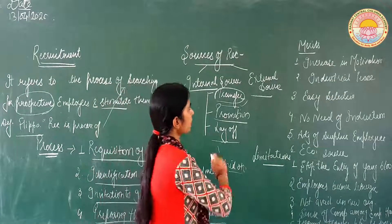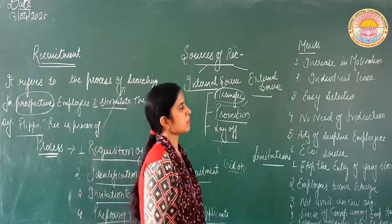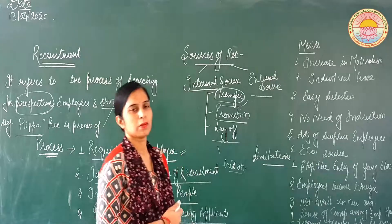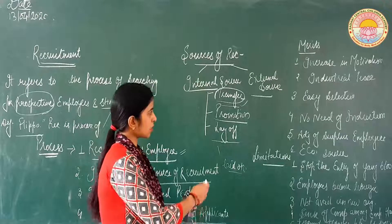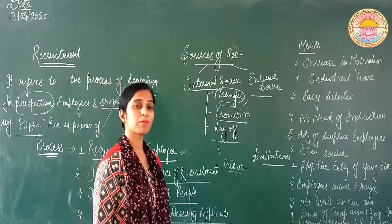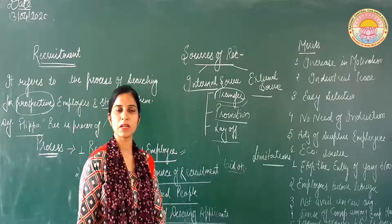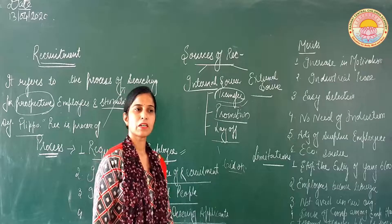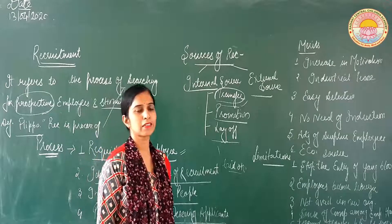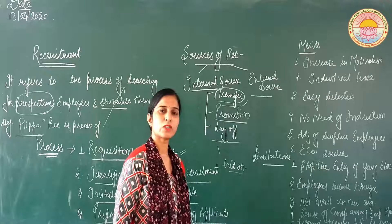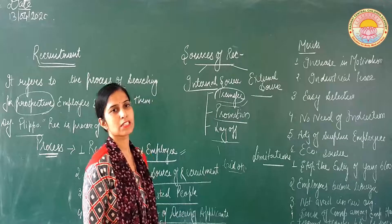Ab hamare internal source of recruitment ke merits aur limitations ko discuss karenge. Merits ka sabse first point hai: increase in motivation. Bade simple se concept hai — jab hum apne employees ko organization mein promote kar rahe hain, toh usse kya hota hai ki employees ka motivation badh ta hai. Jab top level pe for example vacancy aati hai, toh hum jo medium level pe work kar raha hai usko promote kiya, aur wahan phir hum jo lowest rank hai wahan bahar se employees ko appoint karte hain. Toh isse kya hota hai — jab employees ka promotion hota hai, toh employees motivate hote hain, woh apni full efficiency ke saath apni job capacity ki proper utilization karte hain.